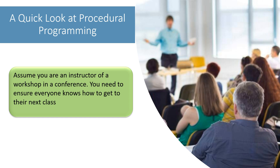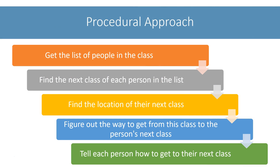In a procedural programming paradigm, your solution to this problem will be something like this. You will get a list of all the people in your class. For each person on the list, you will find the next class they are taking. Once you know the class, you will find where the next class is located. Then you will try to figure out the way from your class to the person's next class. Once you know the path, you will explain to each person individually how to get to their next class.